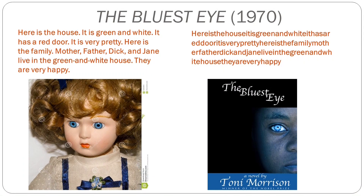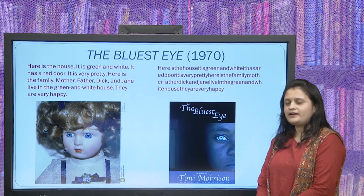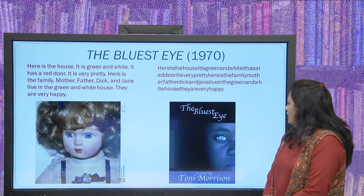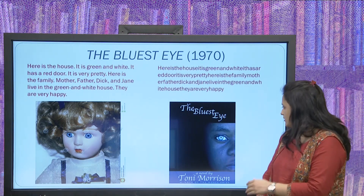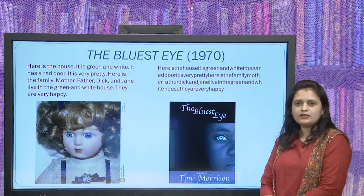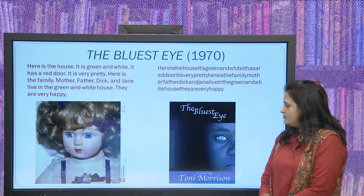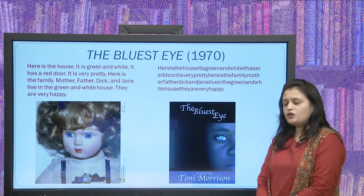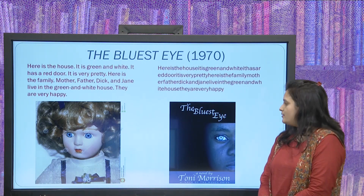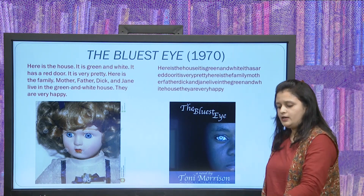Here you can picture Pecola, the main character of the novel. And here is a white doll with blonde or yellow hair, blue eyes, white skin, and red lips — perfect. On the cover page of the novel, Toni Morrison's The Bluest Eye shows a Black girl of African-American descent who is not considered very pretty when compared to the white doll — yet she has blue eyes. This phenomenon develops throughout the novel.